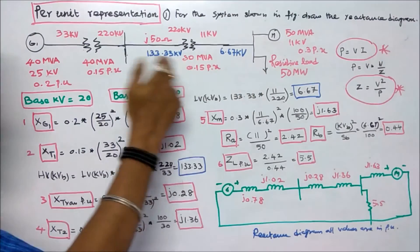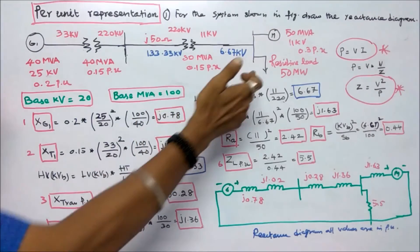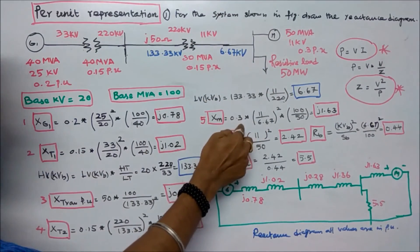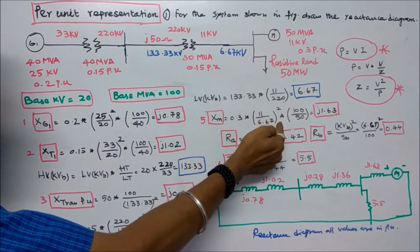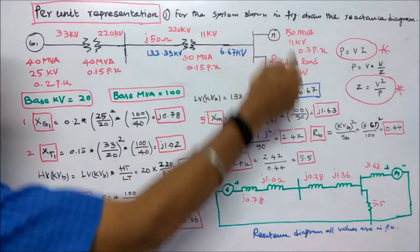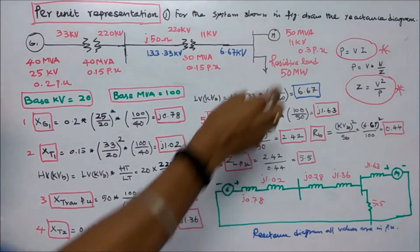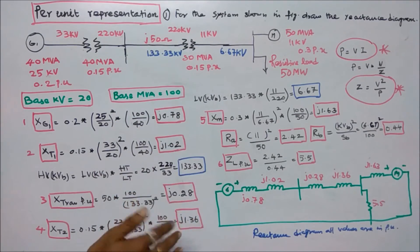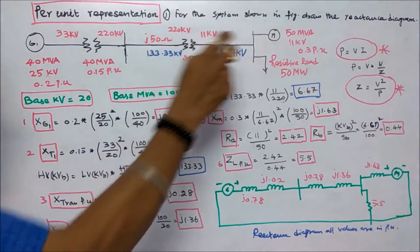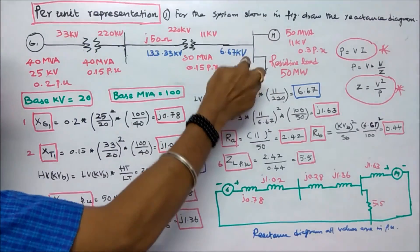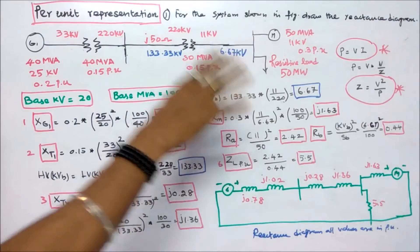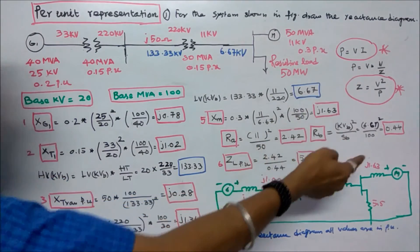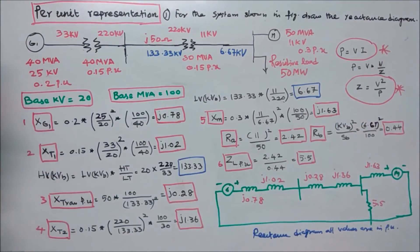The low-voltage kV base equals high-voltage kV base × (LT/HT) = 133.33 × (11/220) = 6.67 kV. Fifth is the motor. Given value 0.3 multiplied by (11/6.67)² × (100/50) equals j1.63. For the resistive load of 50 megawatts, the actual resistance = 11² / 50 = 2.42 ohms. The base resistance = 6.67² / 100, and the per-unit resistance is calculated accordingly.